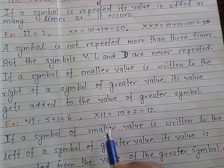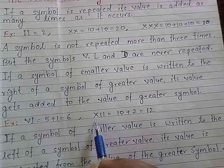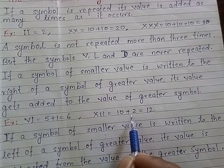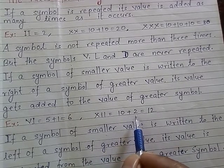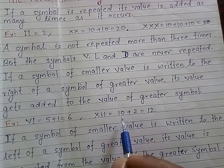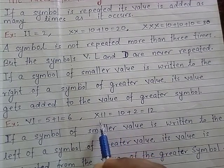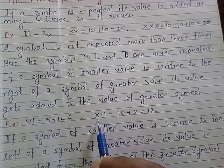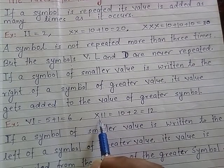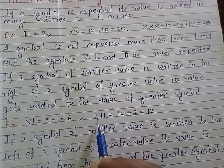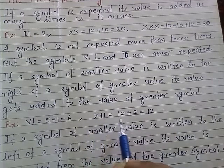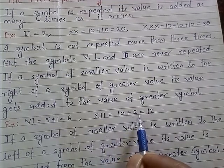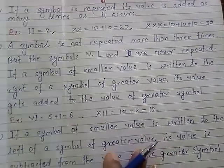Another example: XII — X is 10 and II is 2. Since 2 is smaller and is to the right of 10, we add: 10 plus 2 equals 12.